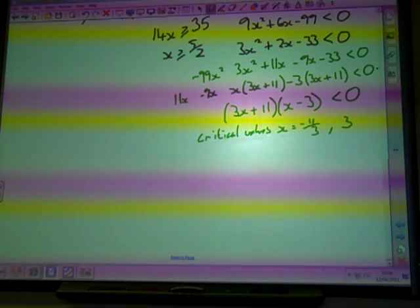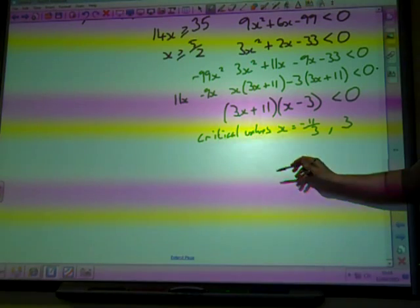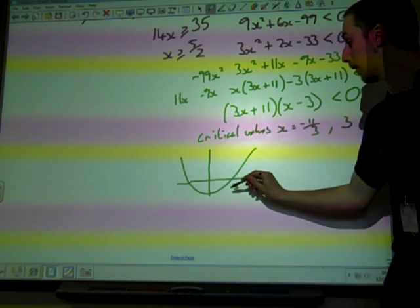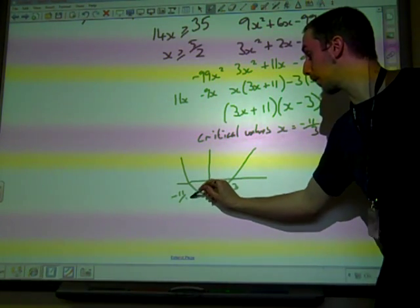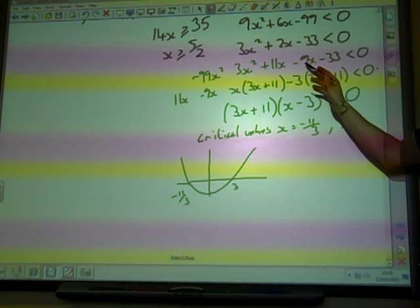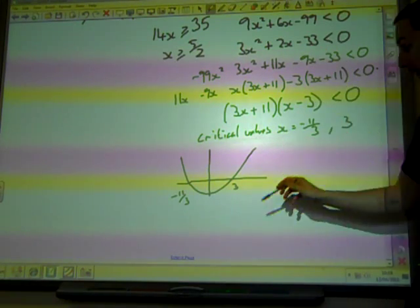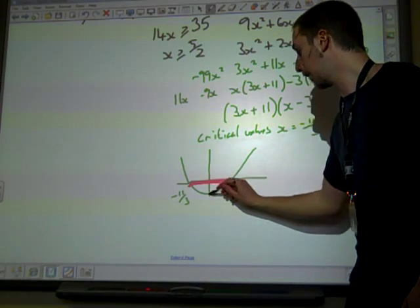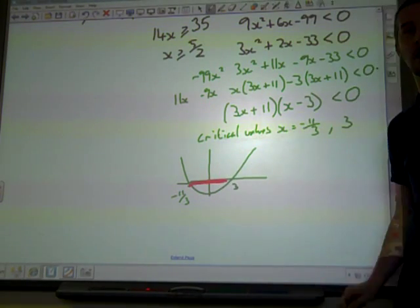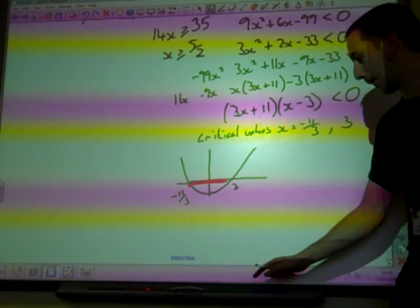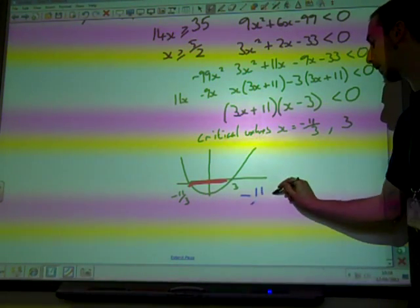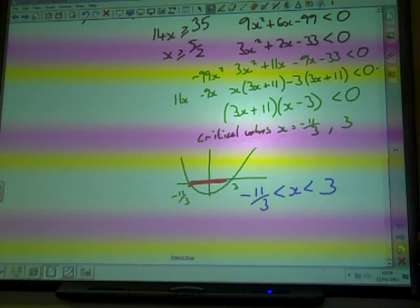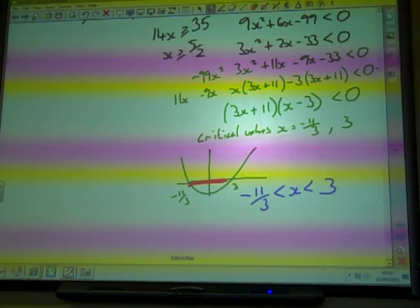So they are our critical values. What we've got here is a quadratic that crosses at 3 and minus 11 thirds, and we wanted to know when this quadratic was less than 0. It's less than 0 there, underneath the axis, so that's the bit that we're after. So the solution here is X between minus 11 over 3 and plus 3.